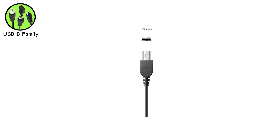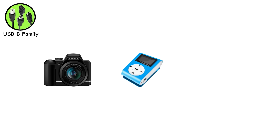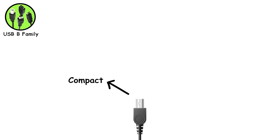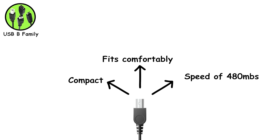Then we got Mini-B, a smaller version that showed up when devices started shrinking. Remember your old digital cameras, MP3 players, or even the PS3 controller? Mini-B was their lifeline. It's compact, fits comfortably on portable gadgets, and supports data transfer at speeds up to 480 megabits per second with USB 2.0.